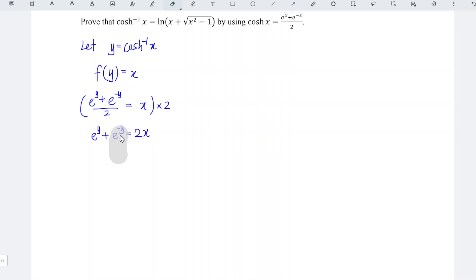Since this is e to the power of negative, which means that it's equal to 1 over e to the power of y. And we times the entire equation by e to the power of y, we should obtain e to the power of y square plus 1 is equal to 2x times e to the power of y.